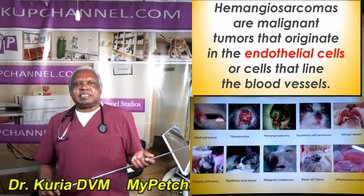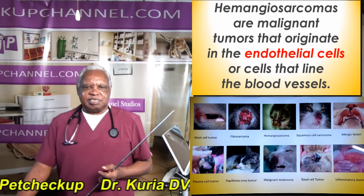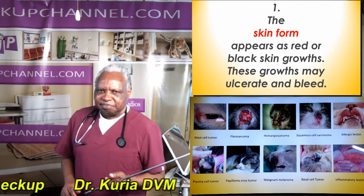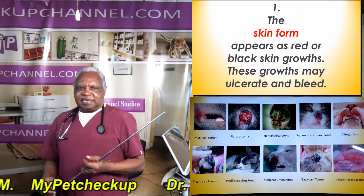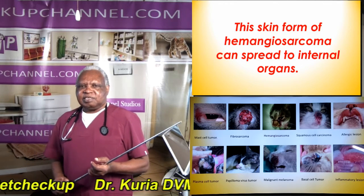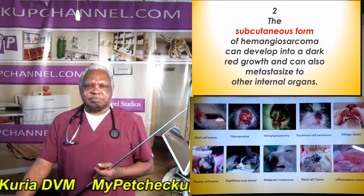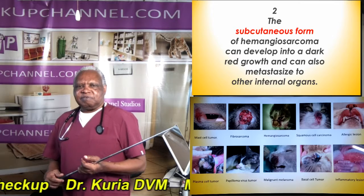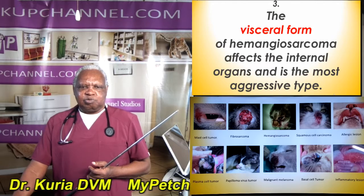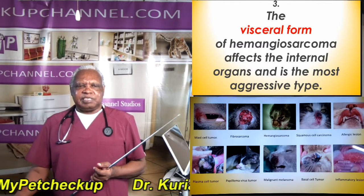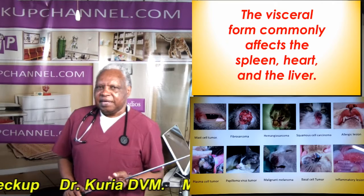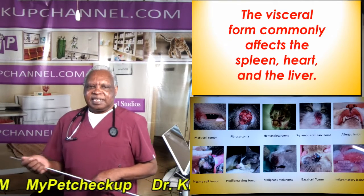Hemangiosarcoma is a malignant tumor that originates in the endothelial cells, or cells that line the blood vessels. There are three forms of hemangiosarcoma. The skin form appears as a red or black skin growth; these growths may ulcerate and bleed. The skin form can spread to internal organs. The subcutaneous form can develop into a dark red growth and can also metastasize to other internal organs. The visceral form affects the internal organs and is the most aggressive type, commonly affecting the spleen, the heart, and the liver.